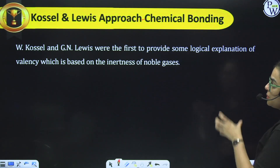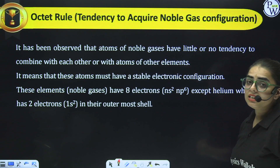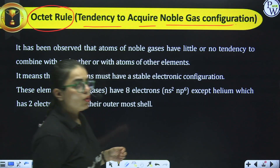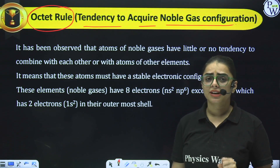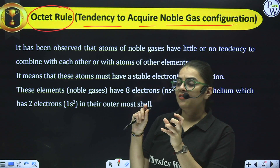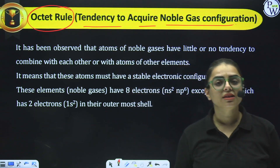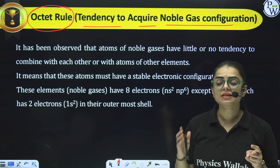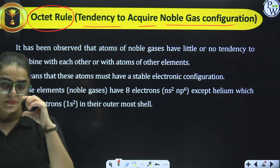Kossel and Lewis were the first to provide a logical explanation to valency based upon the inertness of noble gases. They told us about the Octet Rule — the tendency to acquire the noble gas configuration. The noble gases are Helium, Neon, Argon, Krypton, and Xenon. In order to attain that condition is the octet rule. Octet refers to 8 electrons. For hydrogen and helium, their duplet should be complete; for the rest of the elements, their octet should be complete.